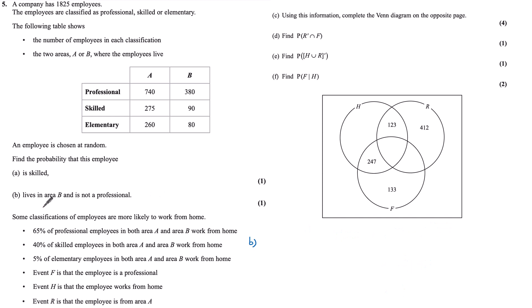Part B. What is the probability that this employee lives in area B but is not professional? So the probability living in B and also not being professional, so it doesn't include the professionals, 90 plus 80 over the total of 1,825, which is 34 over 365.